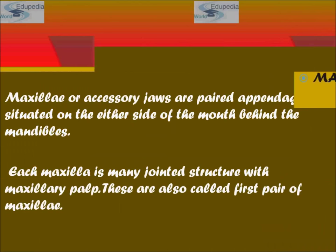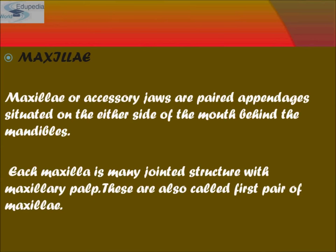Maxilla is the third mouthpart, also known as accessory jaws. They are paired appendages situated on either side of the mouth, behind the mandible. Each maxilla is a many-jointed structure with a maxillary palp. These are also called the first pair of maxillae.